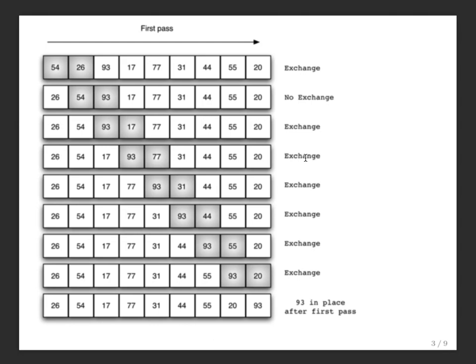Here's a diagram of how this works. The elements shown in gray are the ones being compared. We see that if we compare 54 and 26, 54 gets pushed forward. Then we compare 54 and 93, and we don't swap because 54 is less than 93. The remaining comparisons show that 93 is the largest element, so it just bubbles its way to the top. This is one scan of the list, and after one scan we have one item in position.